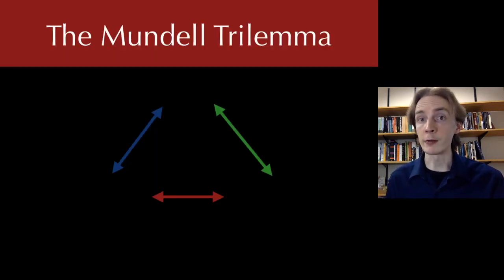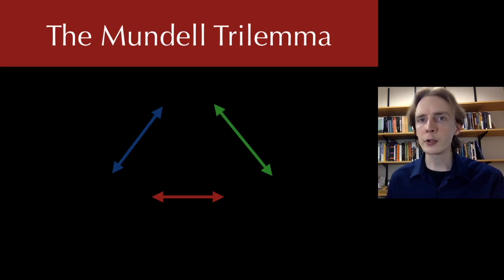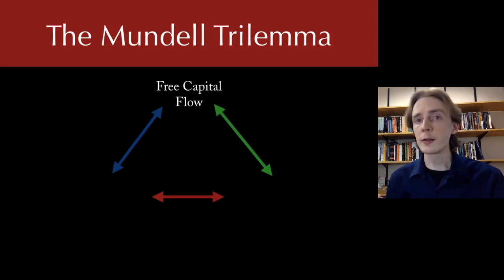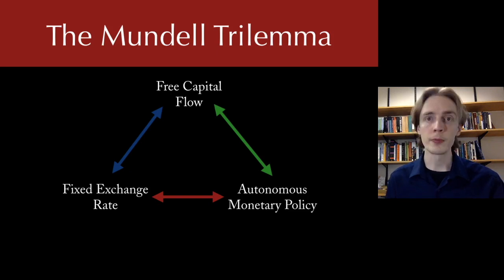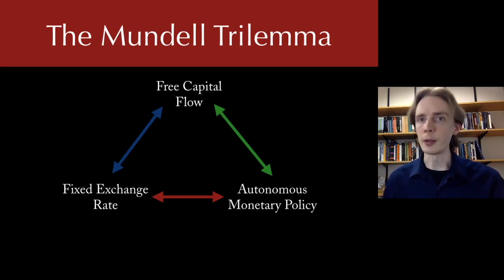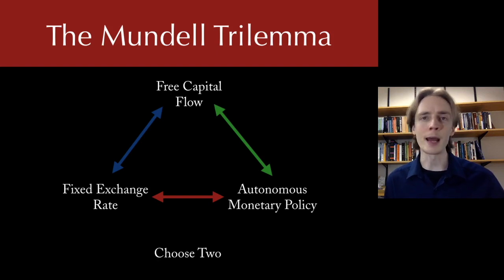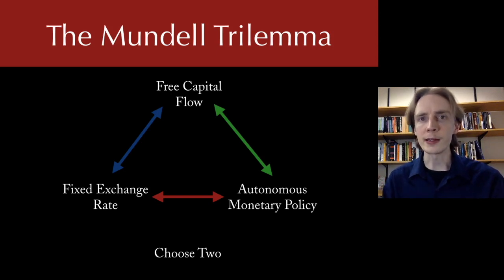Now I want to introduce the Mundell Trilemma. The Mundell Trilemma gives you three goals of an exchange rate regime: first, free capital flow — the ability to buy and sell foreign exchange; second, a fixed exchange rate, for the pros we discussed; and third, autonomous monetary policy — the ability to use the money supply to alter the volume of spending. The Mundell Trilemma says you can't have all three — you can only have two. You can pick any two, but you can't have the third.